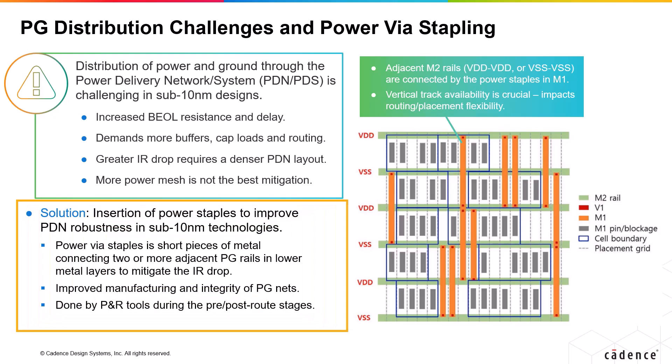This is where power VIA stapling comes into picture. Traditional PDN structures have power mesh on higher metal layers and power rails on one or two lower metal layers, with stacked VIAs in between. Insertion of power staples at lower layer metals is a new technique for improving PDN robustness in sub-10 nanometer technologies. Power staples are short pieces of metal connecting two or more adjacent VDD or VSS rails to mitigate the IR drop.